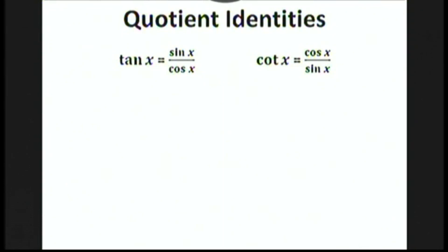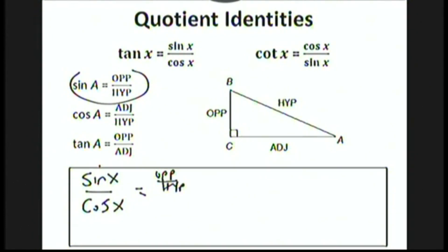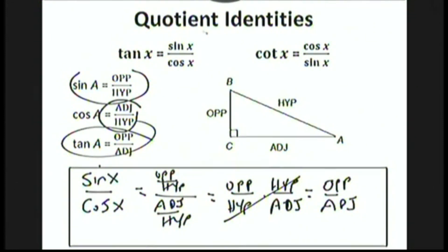Let's start with the quotient identities. These are very simple. The tangent of x is sine x over cosine x, and the cotangent of x, being the reciprocal of tangent, is cosine x over sine x. Let's look at why one of these is true. Sine is opposite over hypotenuse, and cosine is adjacent over hypotenuse. When we divide two fractions, we flip and multiply, cancel out the hypotenuse on top and bottom, and we get opposite over adjacent — which is precisely the definition of tangent. That shows why this first quotient identity is true. The second one can be done in a very similar manner.